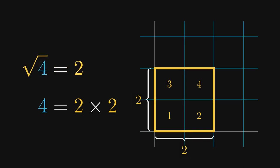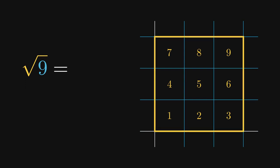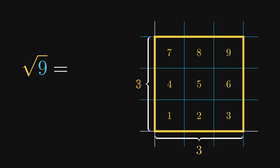Let's try another calculation: the square root of 9. This means we need to find the length of a square whose area equals 9. In this case, the length of the square is 3 units, and its height equals its base — 3 units as well. By considering the area of a square, we can write 9 as 3 times 3. Since 3 is the length of the square that gives an area of 9, the square root of 9 is 3.